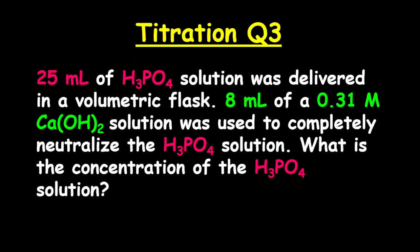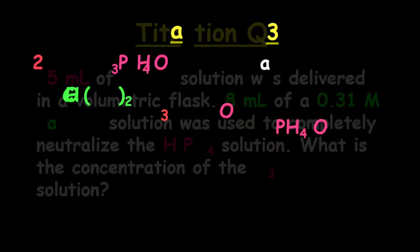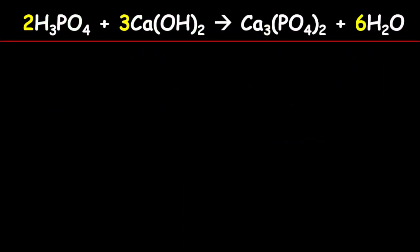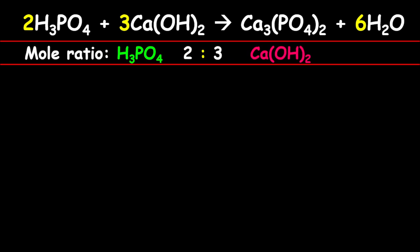Remember, the first thing you should always do is write your balanced chemical equation. From your balanced chemical equation, determine your molar ratio between the acid and the base. For this example, the molar ratio between H₃PO₄ and Ca(OH)₂ is 2 to 3.